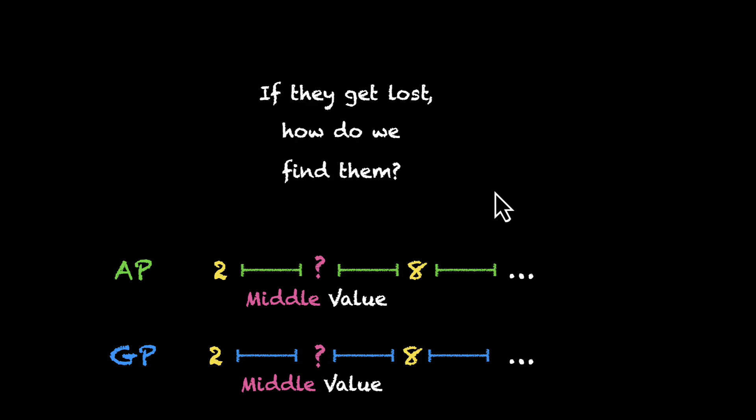Do you want to give this a shot? Pause the video, think about it. What approach would you follow? Sure we don't know this value. But at least we know that these three terms together form an AP. And because these terms form an AP, we can bring in our common difference. We can say that 2 plus d, some common difference, gives us the middle value. And then the same common difference when added gives us 8. This will help us build equations.